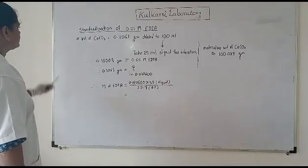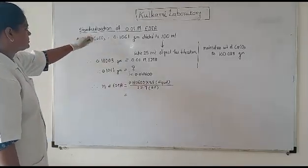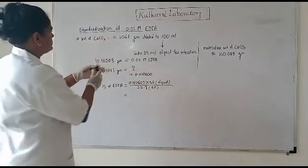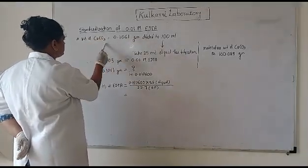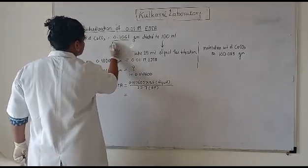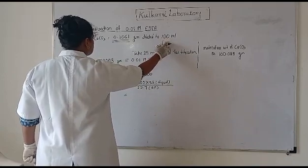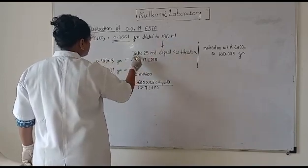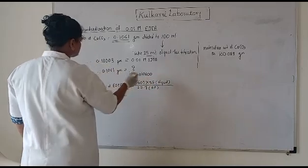Now we will see the calculation part for standardization of 0.01 molar EDTA. The weight of calcium carbonate we took was 0.1061 gram, which was diluted to 100 ml. Then from this 100 ml we took a 25 ml aliquot for the final titration.